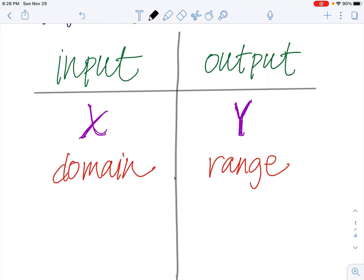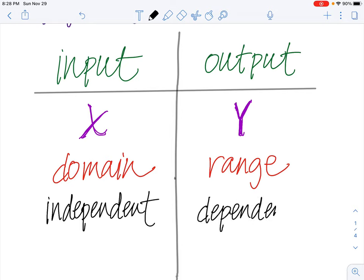Now these are also related to some science terms. The input would be your independent variable. If you're doing an experiment, your independent variable is what you change. The output would be your dependent variable. The dependent variable is what you measure to find out how it affected it.